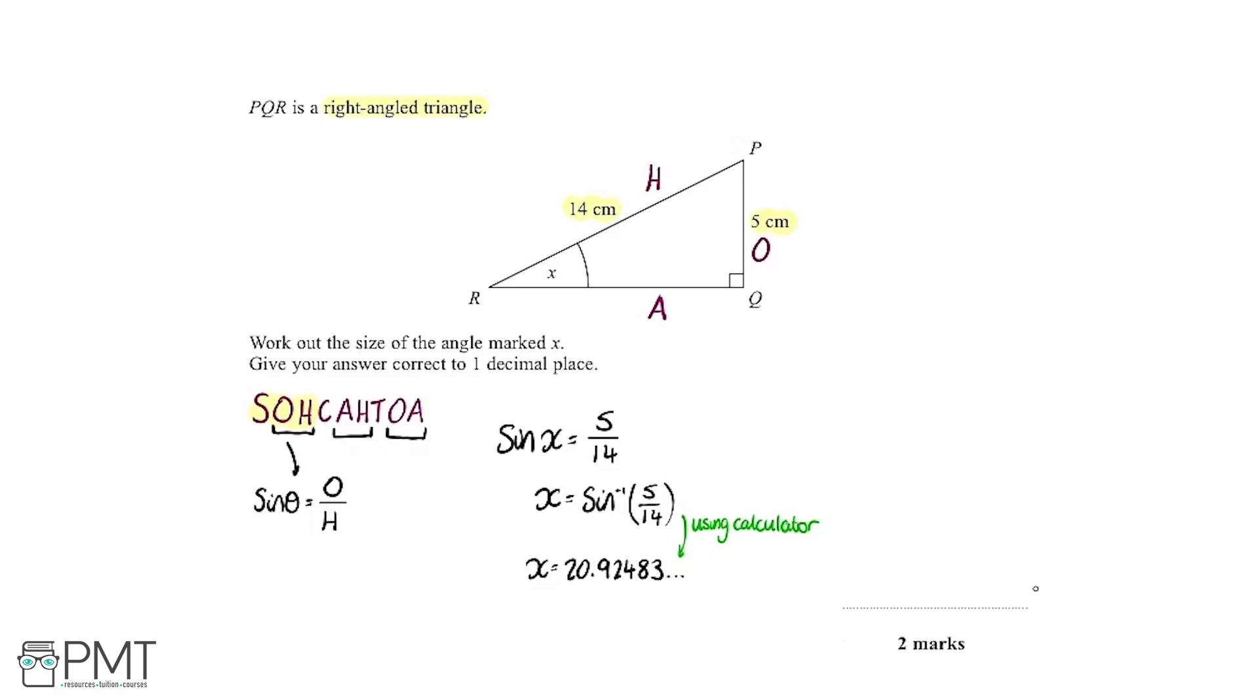But if we refer back up to the question, it says we need to give our answer to one decimal place. So we need to round this to one decimal place. So we're going to say X equals 20 point, and then to round to one decimal place, we look at the one after the point. So we've got 9. Then we look at the number after that and we think, is that 5 or above or lower than 5? If it's 5 and above, we would take this number and raise it up 1. If it's less than 5, we would keep it the same. So 2 is less than 5, so we're going to keep the 9 the same. And we've got 20 point 9, and that's the answer to one decimal place.